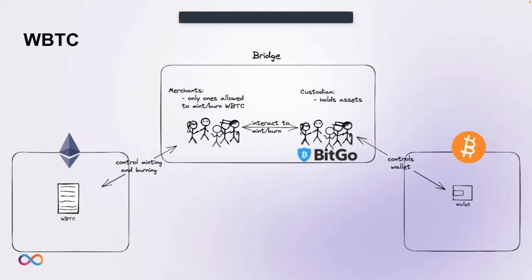We call this type of bridge a trusted bridge. A trusted bridge depends on a central entity for operation, has trust assumptions with respect to the custody of funds and security, users rely on the bridge operator's reputation, and users need to give up control of their assets.